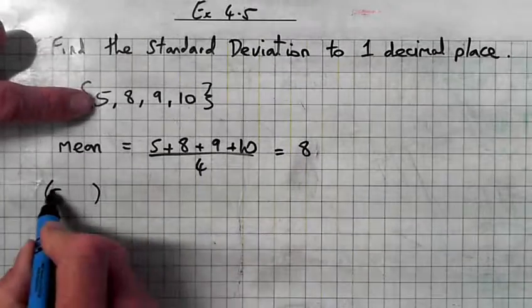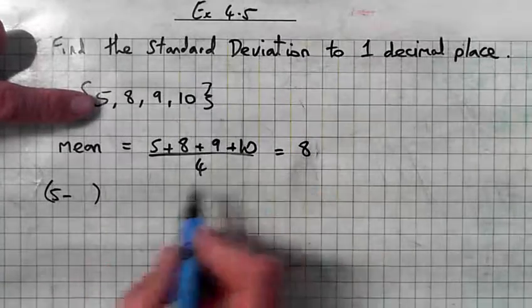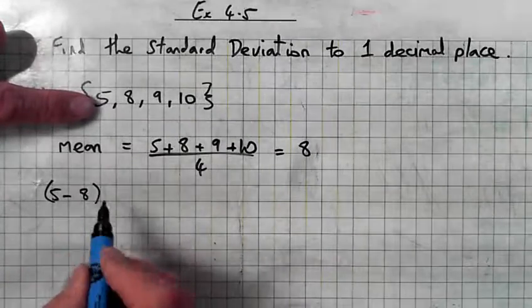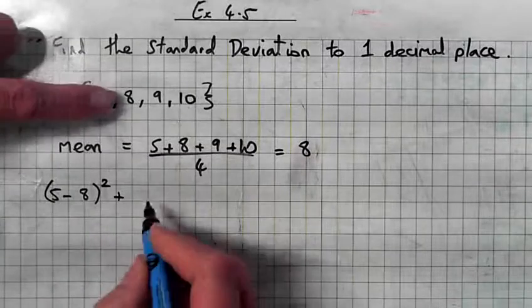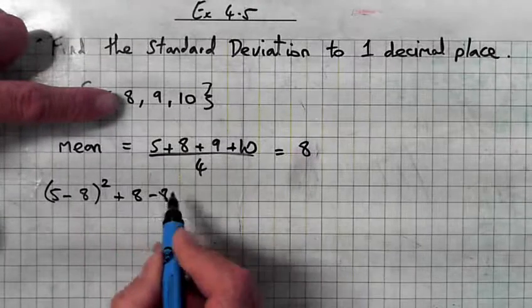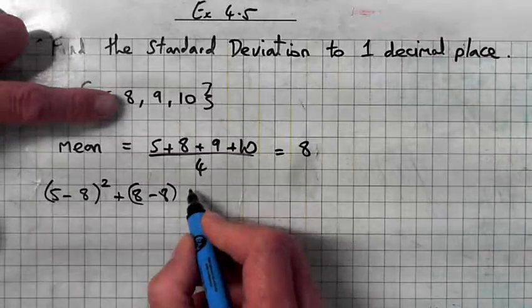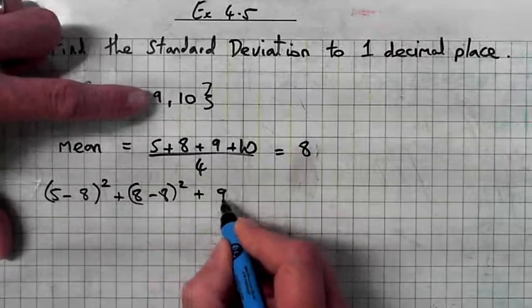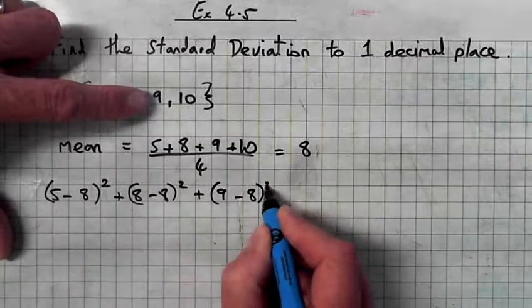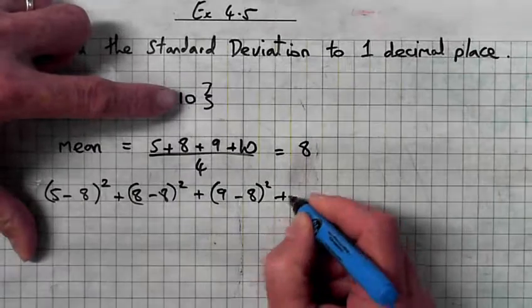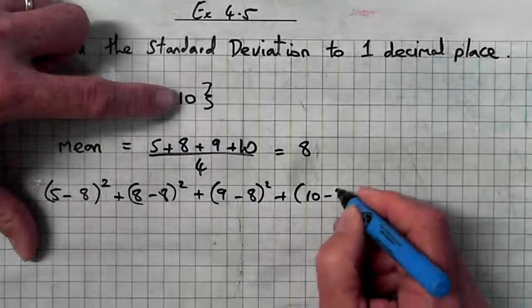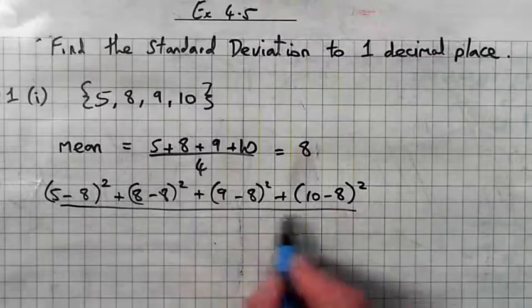Right, so what we need to do next is in brackets we take the first number 5 minus the mean, the average, 5 minus the average squared, plus 8 minus the average squared, plus 9 minus the mean squared, plus 10 minus the mean squared, and divide by there are four numbers.